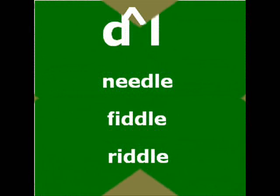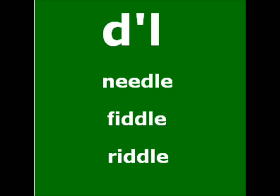This symbol is one we make a lot of mistakes with. We often call it as 'dal', as in needle or 'fidal'. But this is not 'needle' — this is 'needle'. It's 'dl'. This particular symbol is pronounced as 'dl': needle, 'fiddle', riddle — and not 'ridal'. It's riddle.